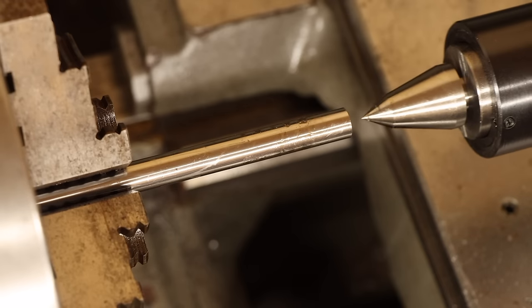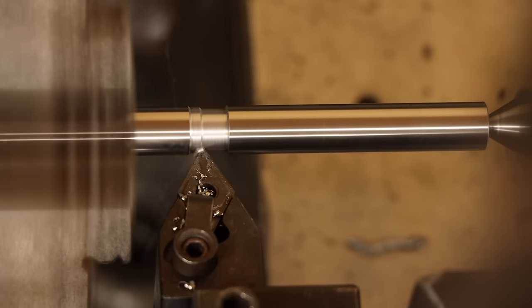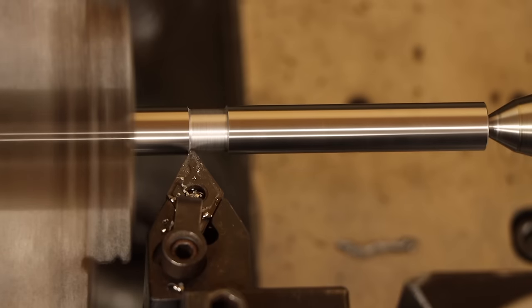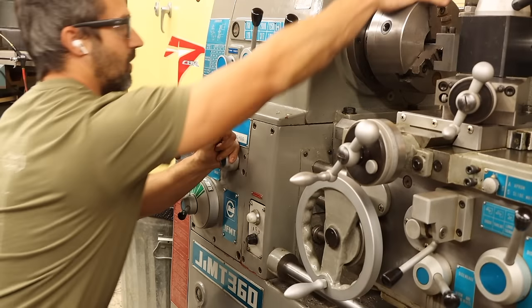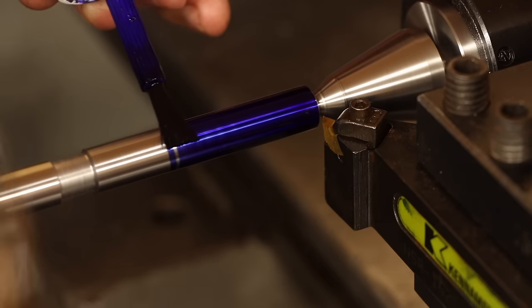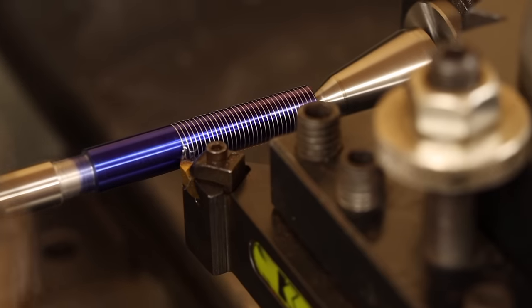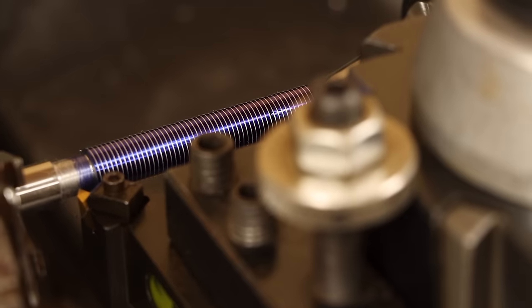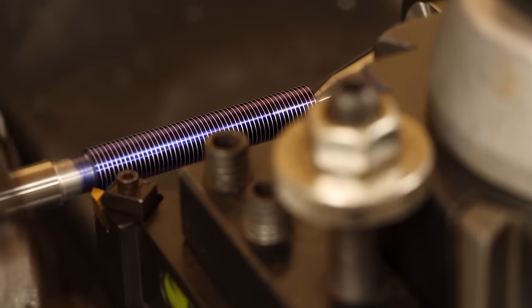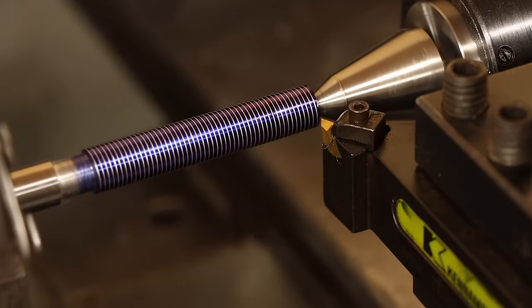I've done several segments on turning threads, so I'll just mention a key point for this setup. These threads are metric, but the lead screw on my machine is imperial, so the thread dial is, for the most part, useless. Ask me how I know. To get around this, I have to keep the thread feed engaged the entire time and reverse the lathe between each cutting pass. After verifying I'm cutting the correct pitch, I can proceed with taking the passes, stopping and reversing the spindle after each.